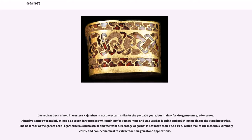Garnet has been mined in Western Rajasthan and Northwestern India for the past 200 years, but mainly for gemstone-grade stones. Abrasive garnet was mainly mined as a secondary product while mining for gem garnets, and was used as lapping and polishing media for the glass industry. The host rock of the garnet here is garnetiferous mica schist, and the total percentage of garnet is not more than 7% to 10%, which makes the material extremely costly and non-economical to extract for non-gemstone applications.